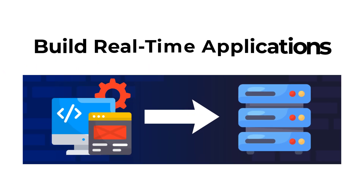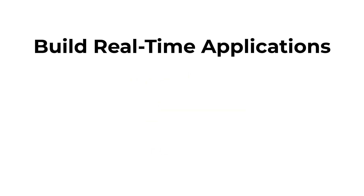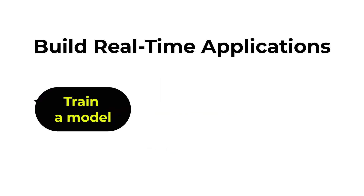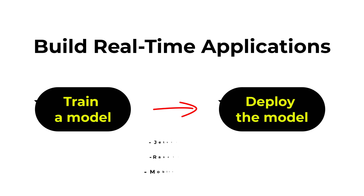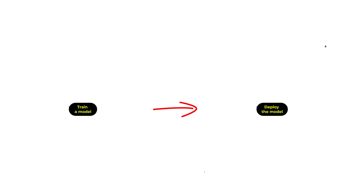After learning these topics, the next thing you need to do is build real-time apps. Imagine you trained a computer vision model — you can deploy it on embedded systems like Jetson Nano, Raspberry Pi, and mobile devices.